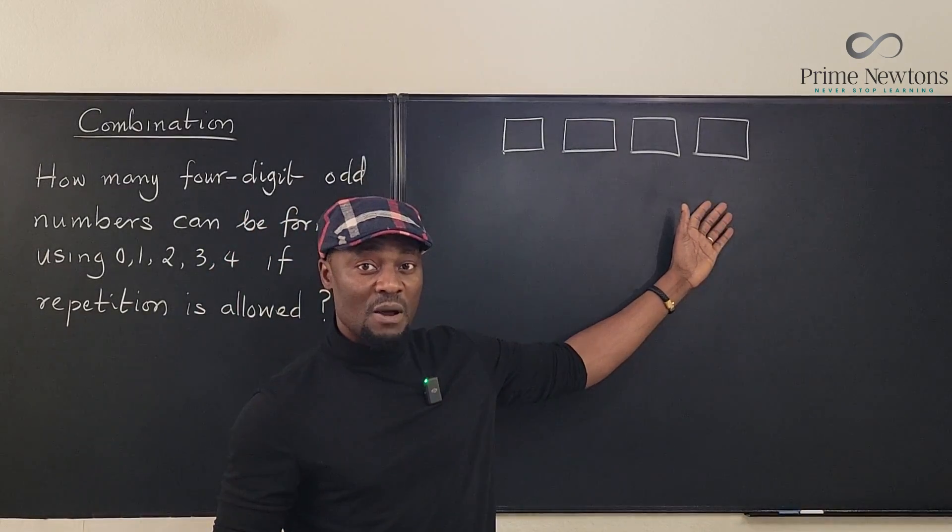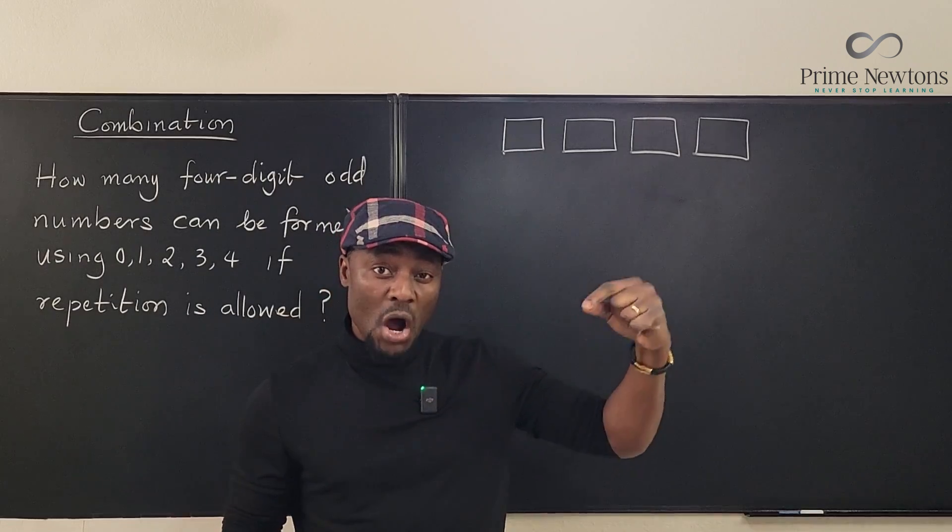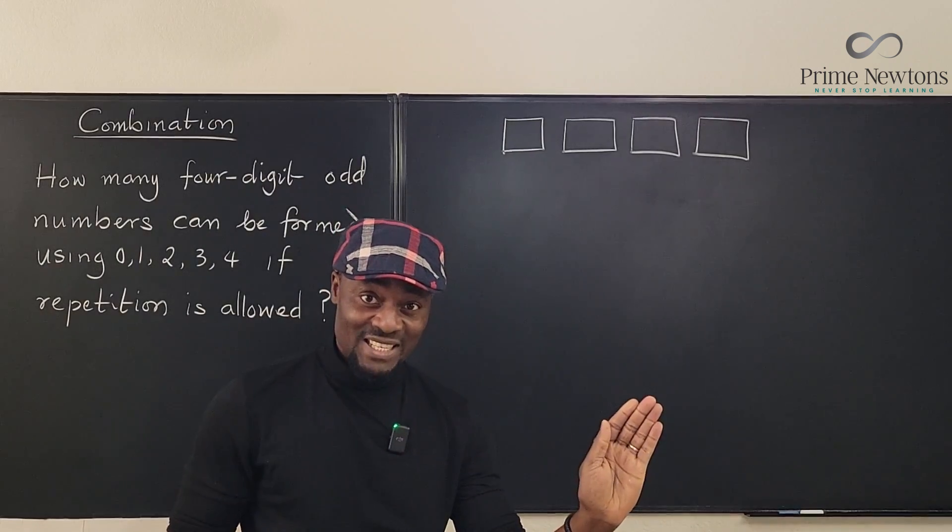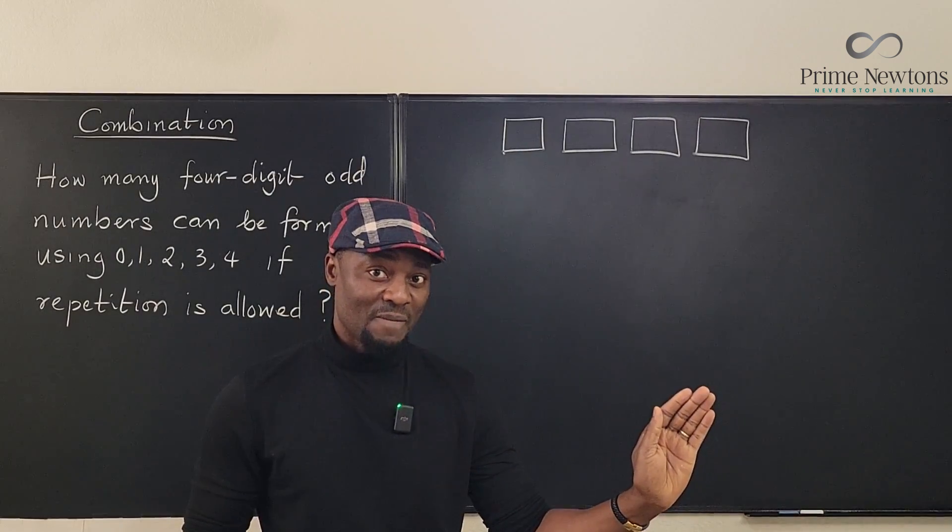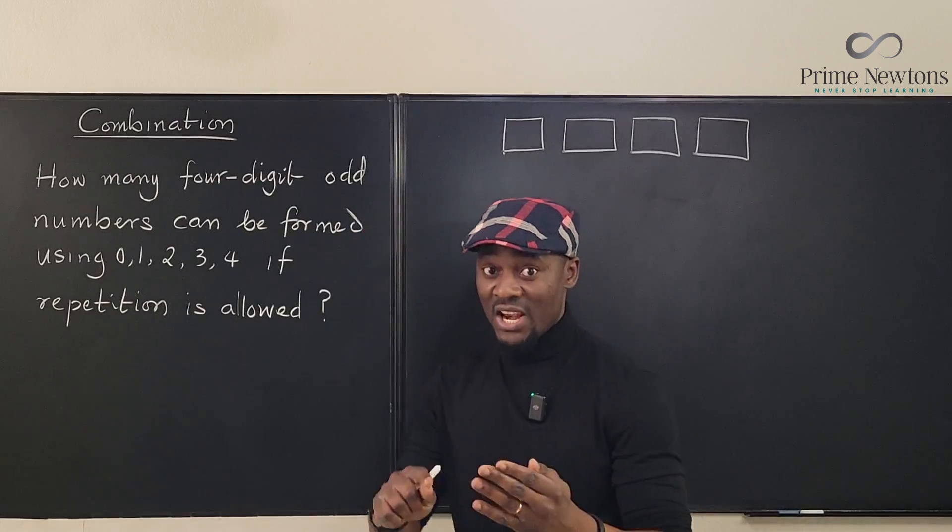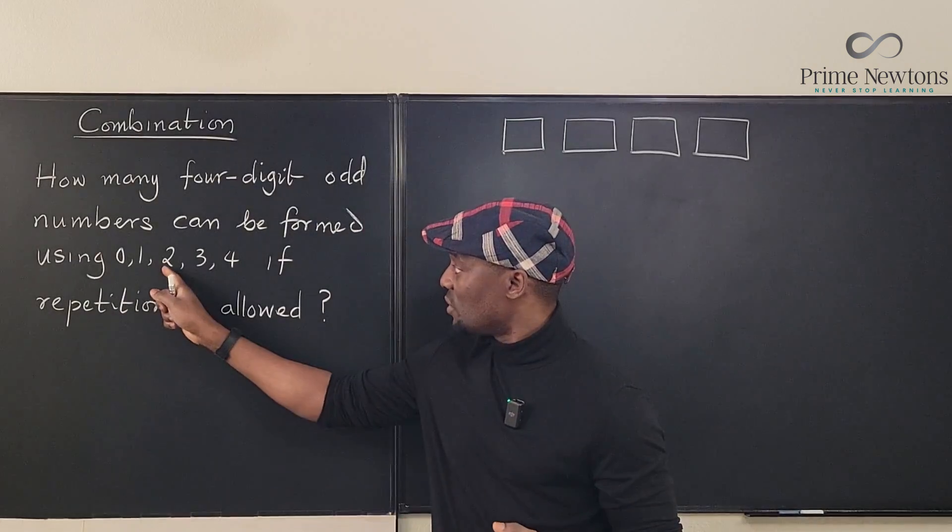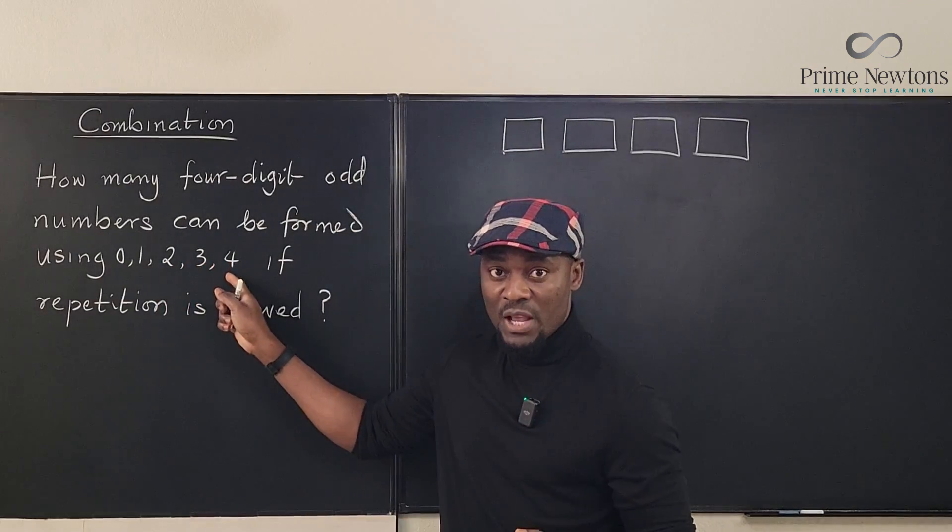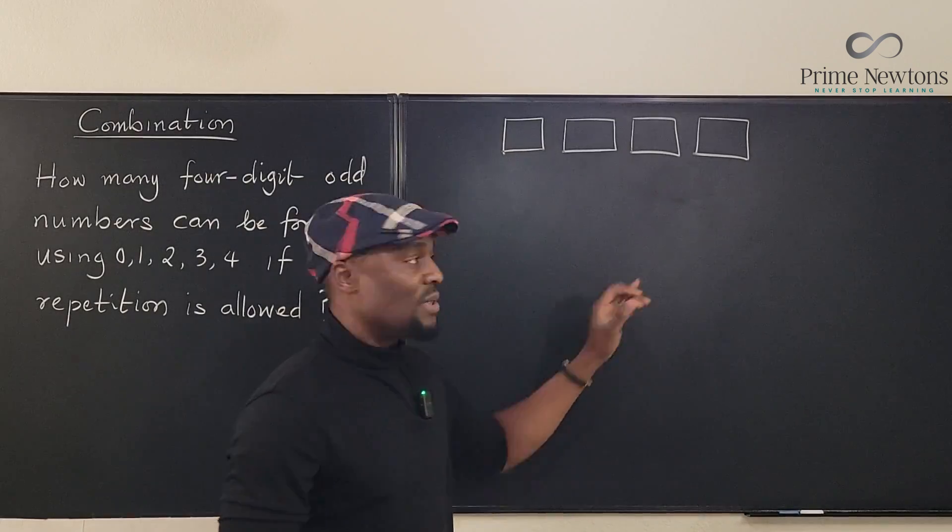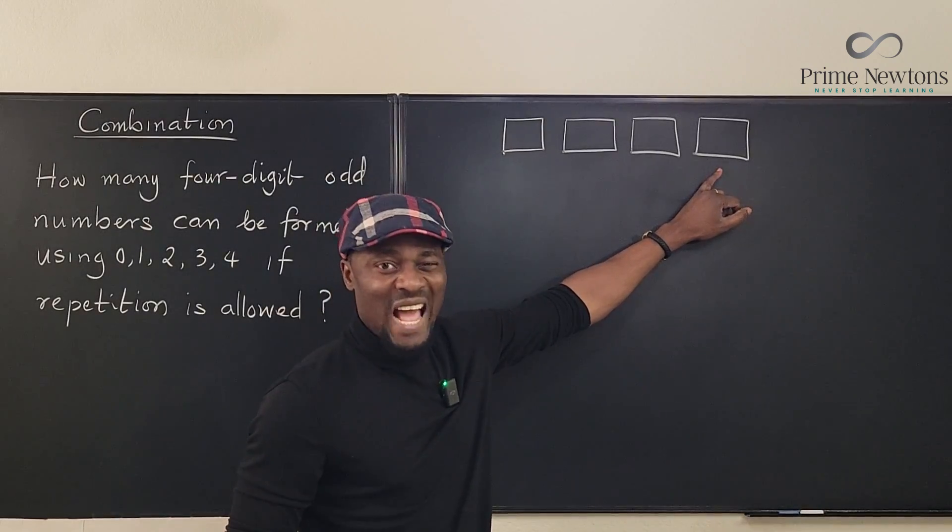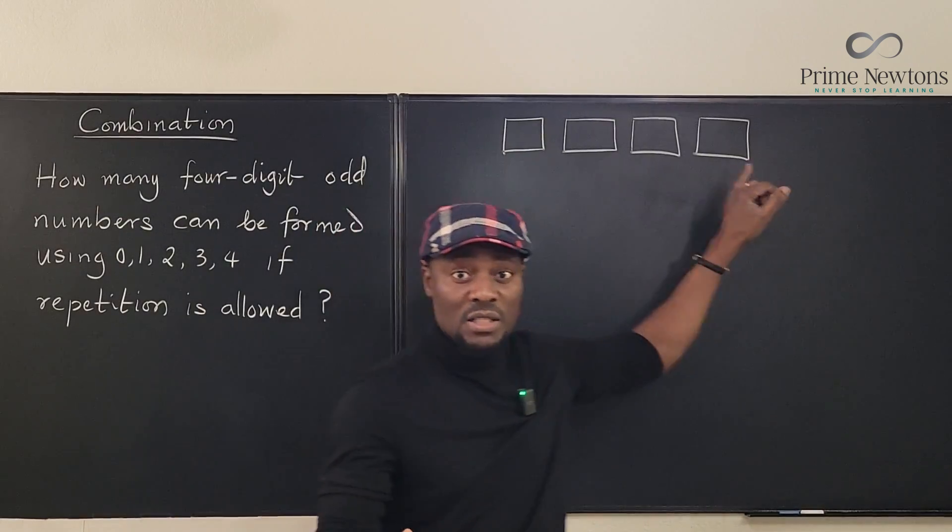So we already created a template for a four-digit number, but for a number to be odd, the last digit is the most important thing. Remember, the last digit cannot be zero, cannot be two, and it cannot be four.